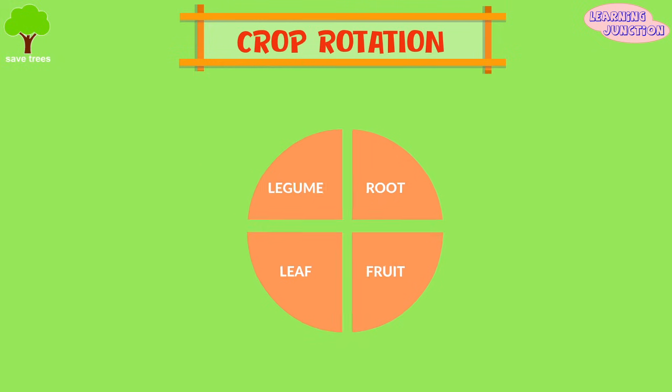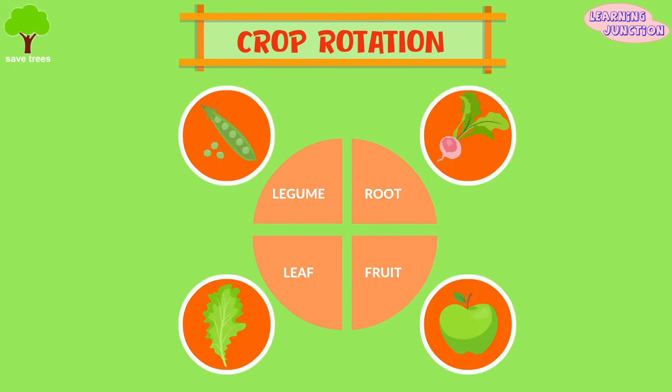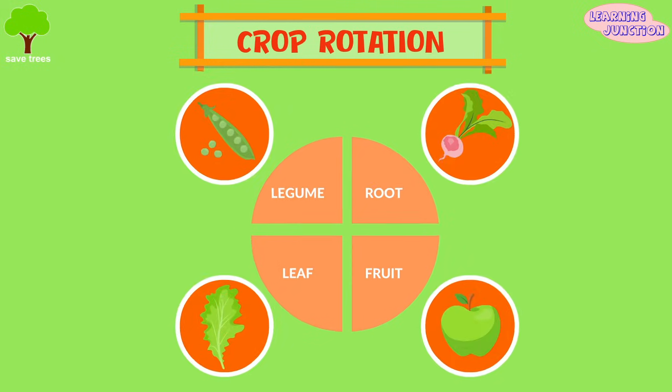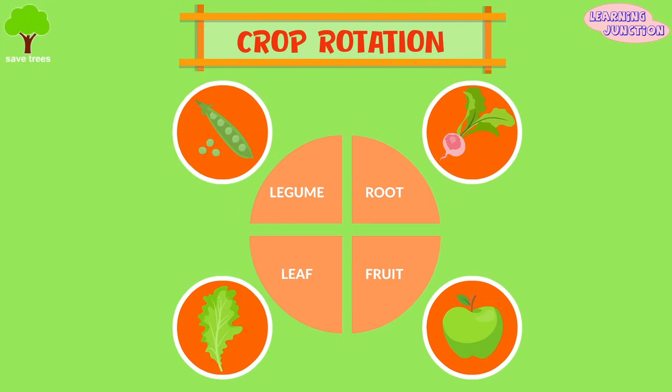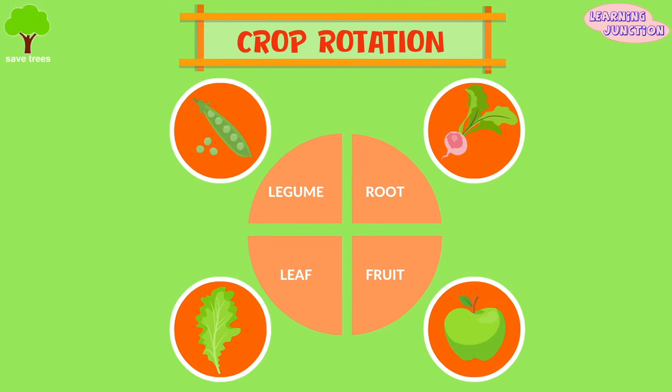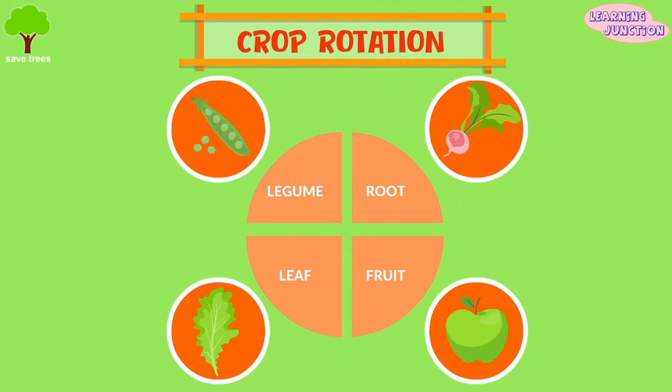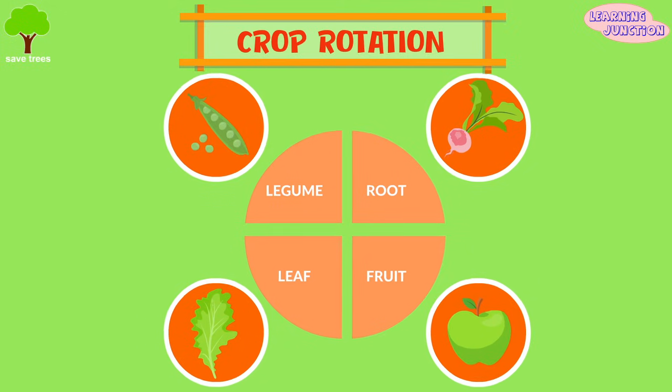Crop rotation: growing crops in rotation reduces erosion, as the layer of residue prevents topsoil from being carried away by wind and water.